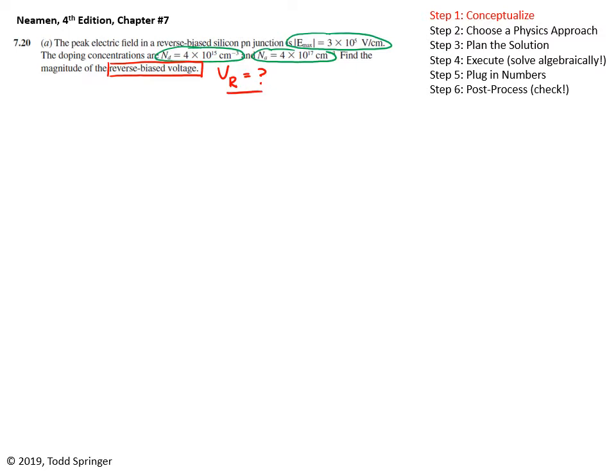To get started, it might help to remind yourself what a p-n junction looks like. The doping is fairly straightforward, but this Emax is the maximum electric field in the junction. What controls that, and how is it related to what we're looking for, the reverse bias voltage?